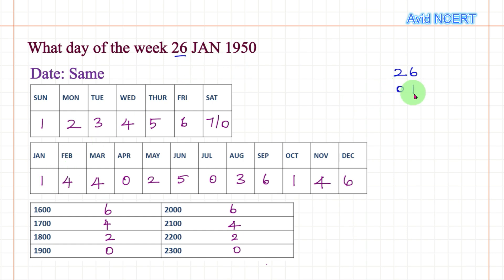1950, so 1950 comes here, so it is 0. Then write this 50 as is, and then divide this 50 by 4 and write the quotient.